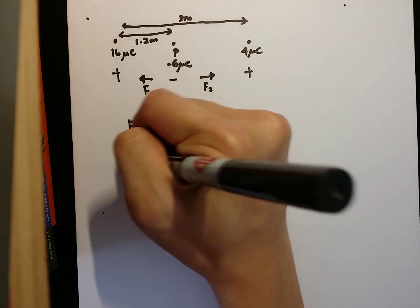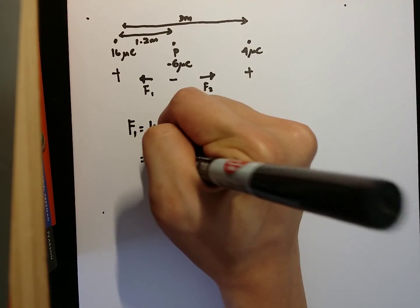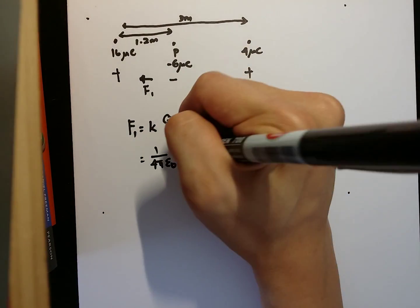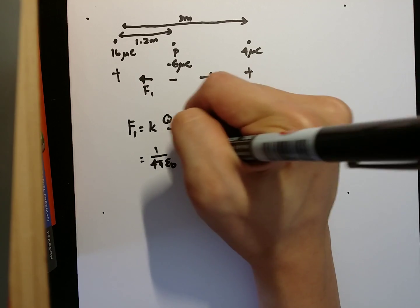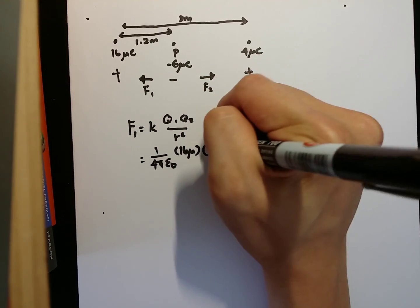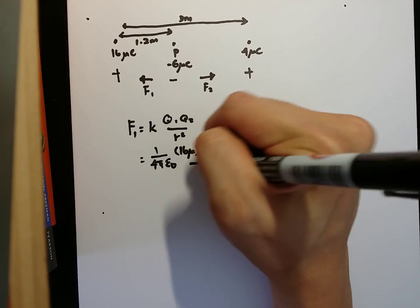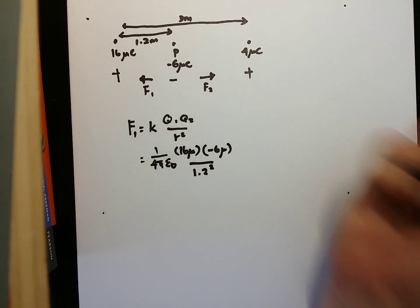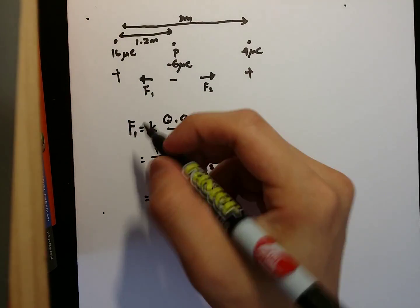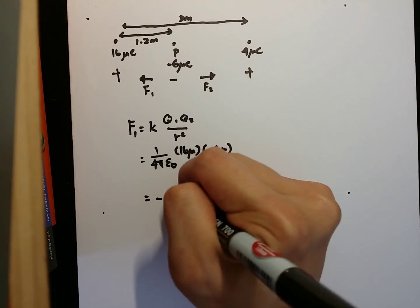That will be 1 over 4π epsilon naught, 16 micro, minus 6 micro, divided by 1.2 squared. Thus, I will get negative 0.6 newton.